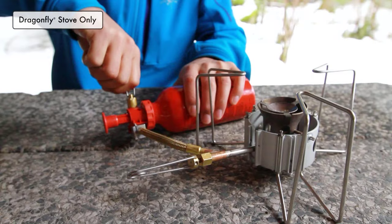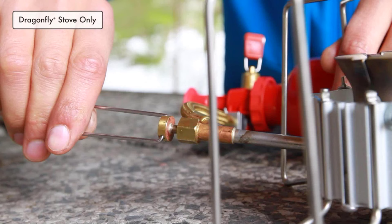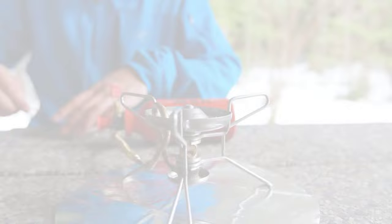If you have a Dragonfly stove, turn the pump control valve on fully. Then turn the flame adjuster valve to allow half a spoonful of fuel to pass through the jet. Then close the flame adjuster valve.